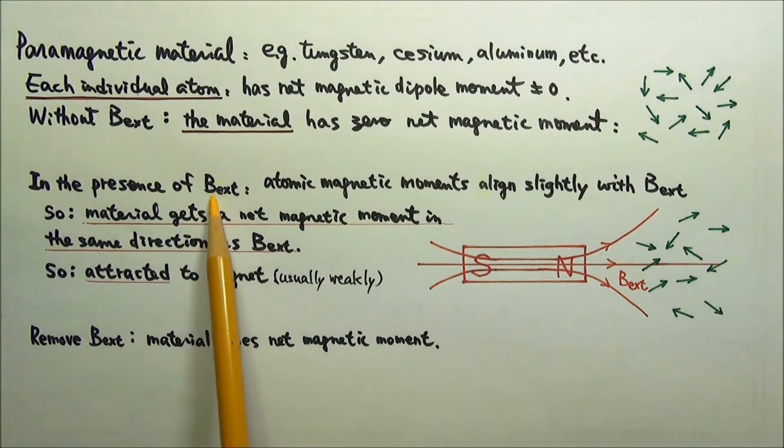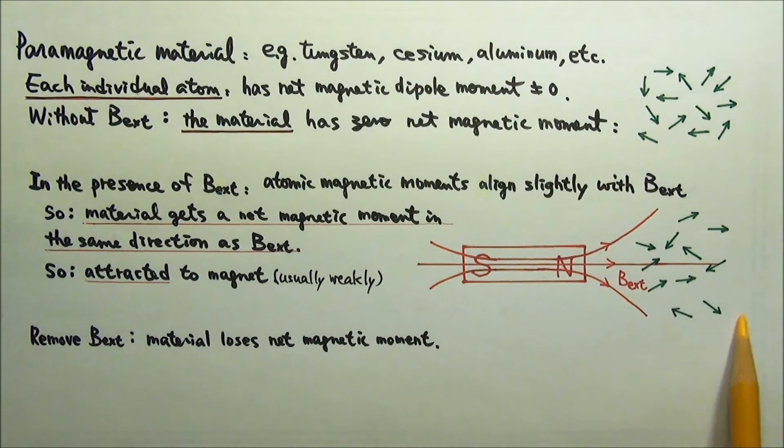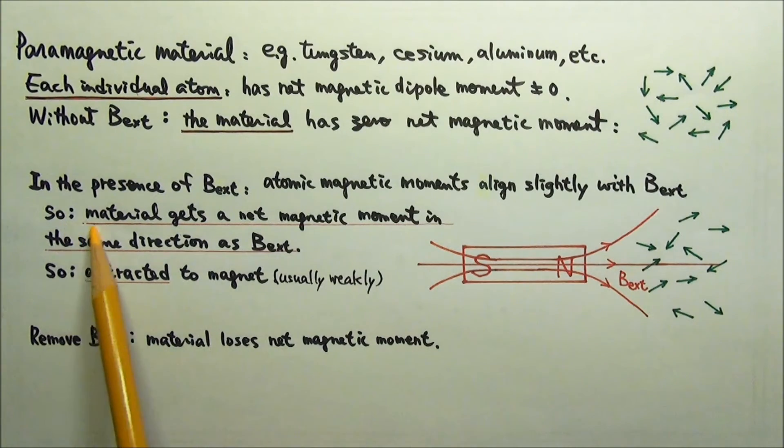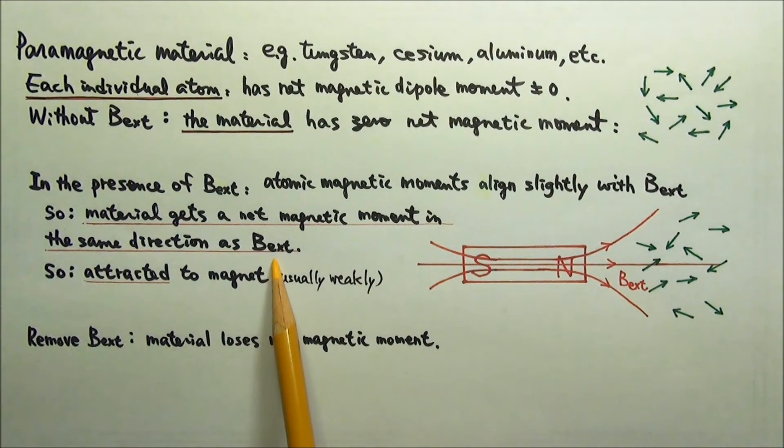When placed in an external magnetic field, the atomic magnetic dipole moments can align slightly with the external magnetic field. So the material gets a net magnetic dipole moment that is in the same direction as the external magnetic field.